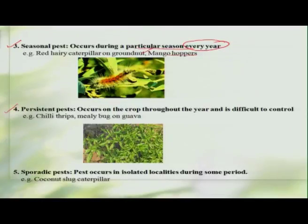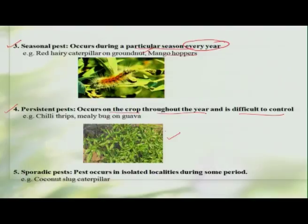Some pests are referred to as persistent pests, which persist on the crop throughout the year and are quite difficult to control. For example, on chili, we have the chili thrips — the pest occurs and persistently keeps causing damage right from germination to the harvesting period. The fifth category is the sporadic pest, where the pest occurs in isolated localities during some periods of time. A good example is the coconut slug caterpillar.